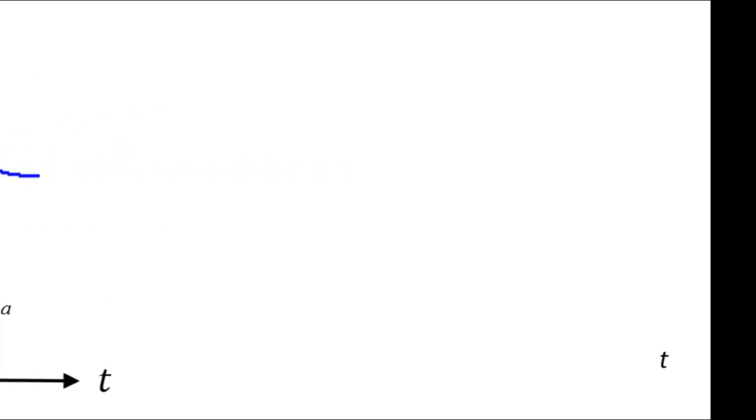And the integral? Consider that what we have is the current i as a function of time. The area under that curve is q, the total charge that has crossed the checkpoint between t equals a and t equals b. In mathematical notation, q is the integral of i dt between a and b.